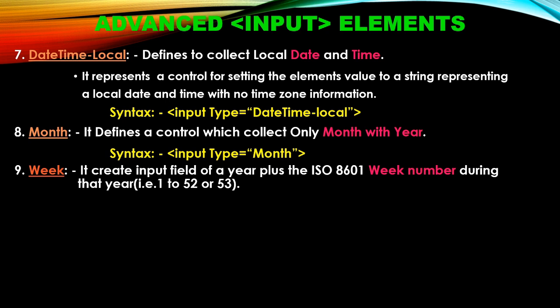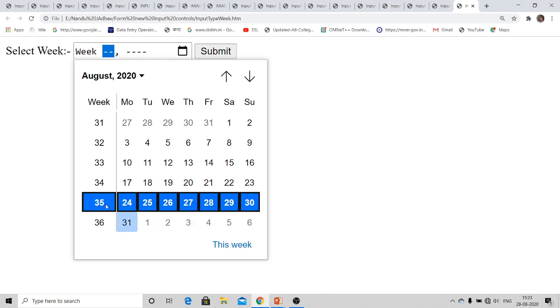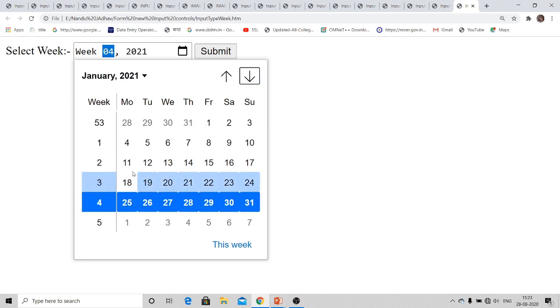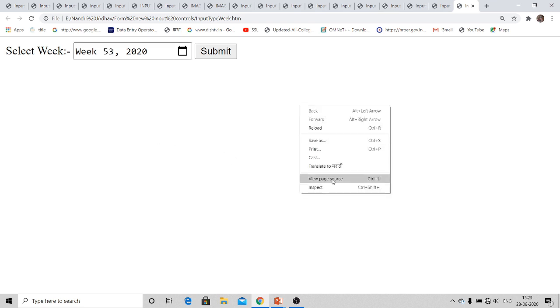The next input element is week. Week numbers are provided according to ISO 8601. Normally there are 1 to 53 weeks in a year — most years have 52, but sometimes there are 53. The syntax is input type equal to week. In the example, the current week number is 35, and this year has 53 weeks.